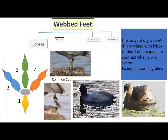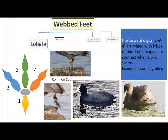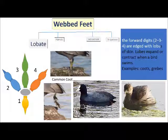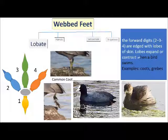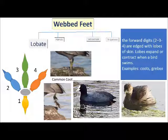Lobed feet is yet another type of webbed feet, in which the forward digits, marked as 2, 3 and 4, are edged with lobes of skin. The lobes expand or contract when a bird swims. Examples are coots and grebes.